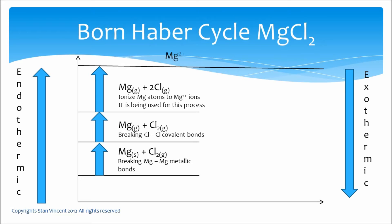At this stage we have Mg²⁺ ions in the gas state, 2 moles of chlorine atoms, and 2 moles of electrons. The chlorine atoms will react with the electrons to form chloride ions. When one mole of chlorine atoms gains one mole of electrons, it changes into chloride ions and releases a large amount of energy. This energy is called electron affinity. With 2 moles of chlorine atoms and 2 moles of electrons combining, we get 2 moles of chloride ions.